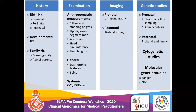As highlighted in previous presentations, detailed history including birth history, developmental history, and family history is essential. On examination, serial anthropometric measurements are important — sitting and standing height, upper-lower segment ratio, arm span, head circumference, and limb length.